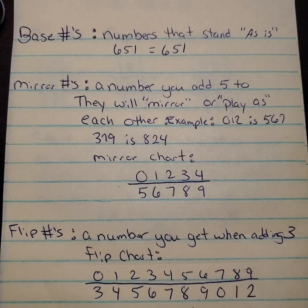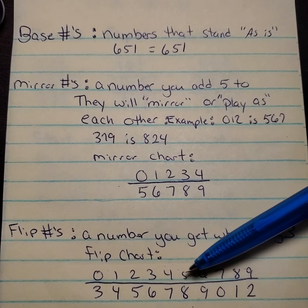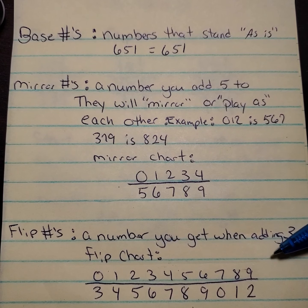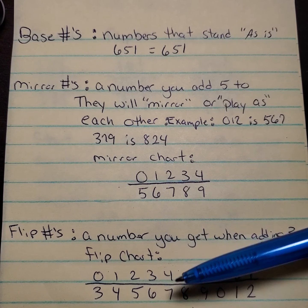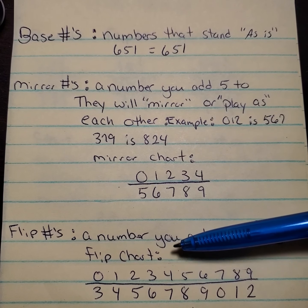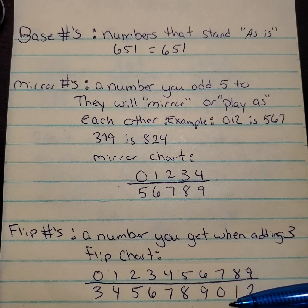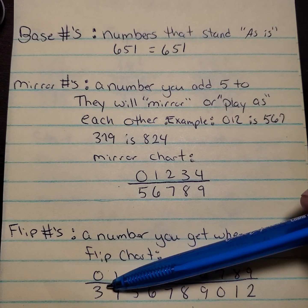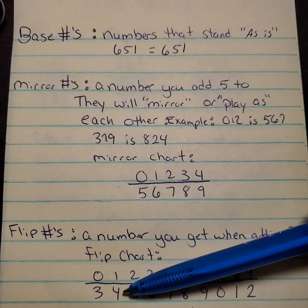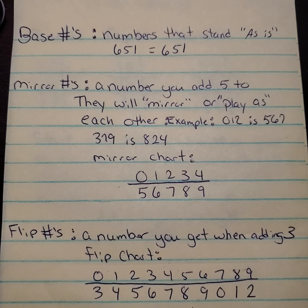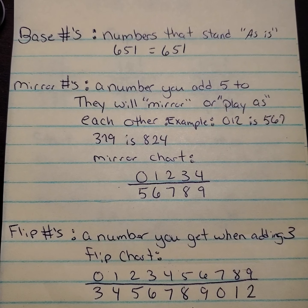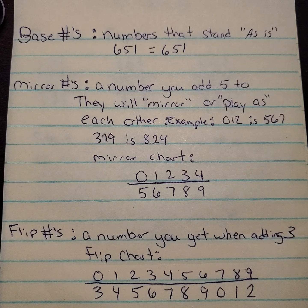Flip numbers are where you add 3 to whatever your number is. This one doesn't just stop at 4 — it goes from 0 through 9, giving you all of your numbers, because flip numbers can't be played as each other; that's only if it's a mirror. So if you add 3 to 0, that gives you 3. If you add 3 to 1, that gives you 4, and so forth. Those are your flip numbers and they come in handy when setting up certain types of tic-tac-toe boards.